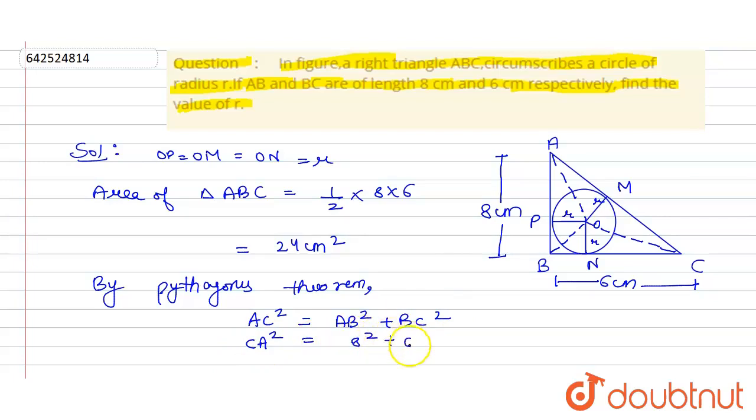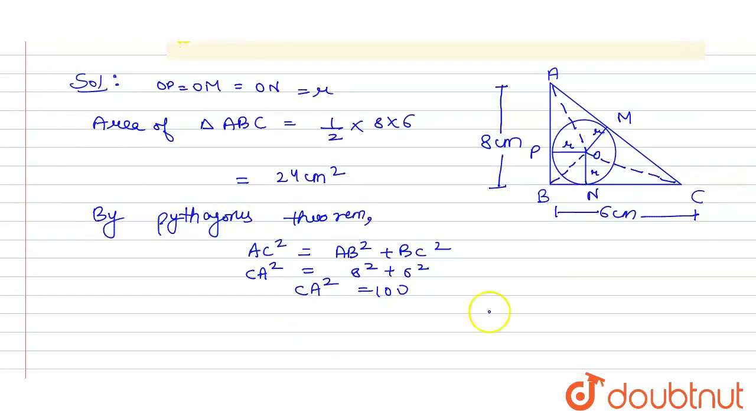CA² = 100, and after taking the square root, we get CA = 10 centimeters. So we have all three sides of this triangle. Next, we know that: